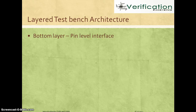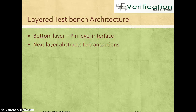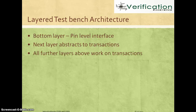The bottom layer is a pin-level interface layer. Components like drivers and monitors need to understand pin-level information and are tied to the design, so they must change when the design changes. The next layer abstracts all communications in terms of transactions, classes, or objects. Components in this layer can be reused across different block-level, chip-level, or project environments without needing changes when signal-level information changes. Any further layer above always works on transactions, so those can be developed in parallel and reused across projects or blocks.